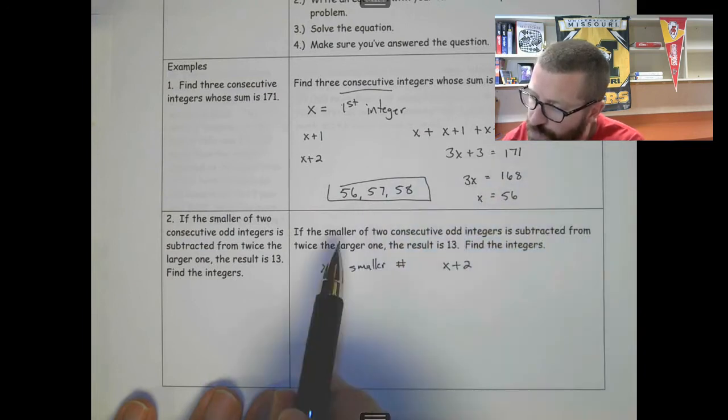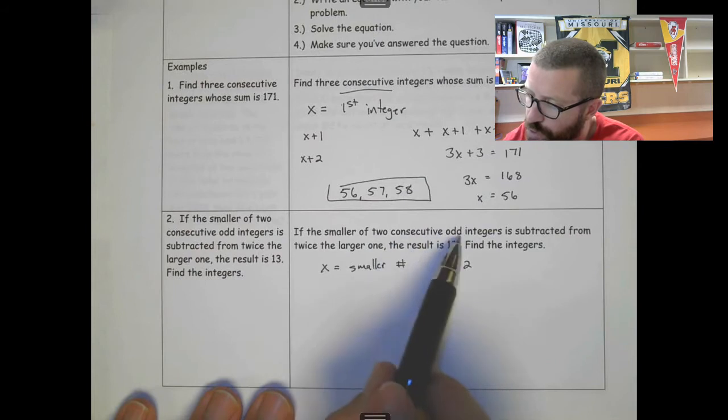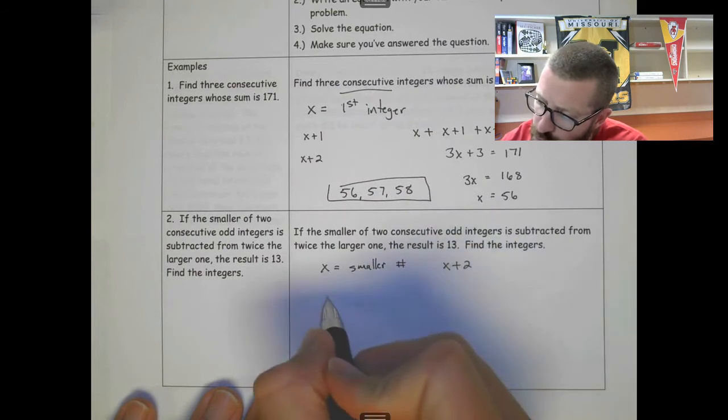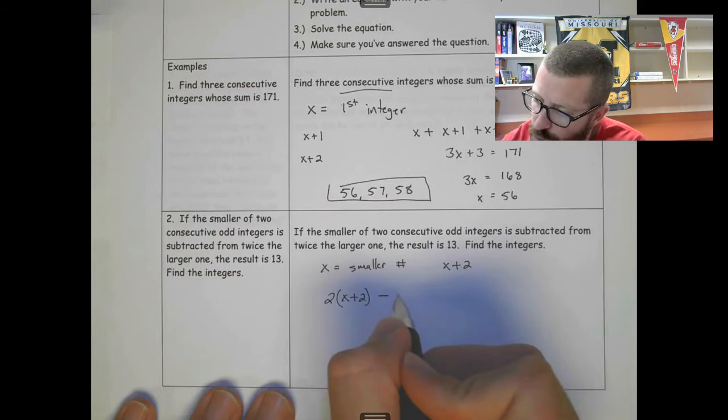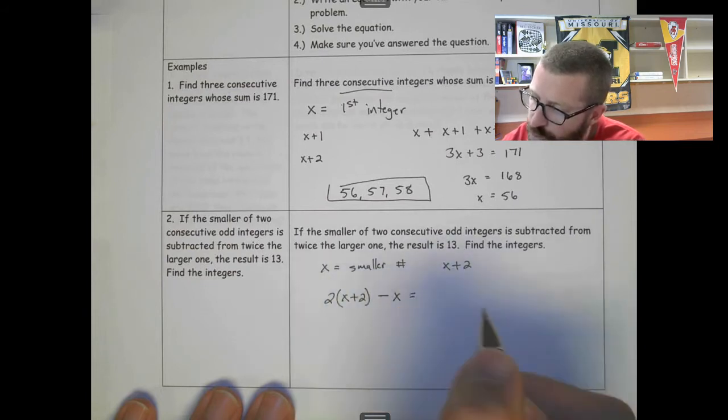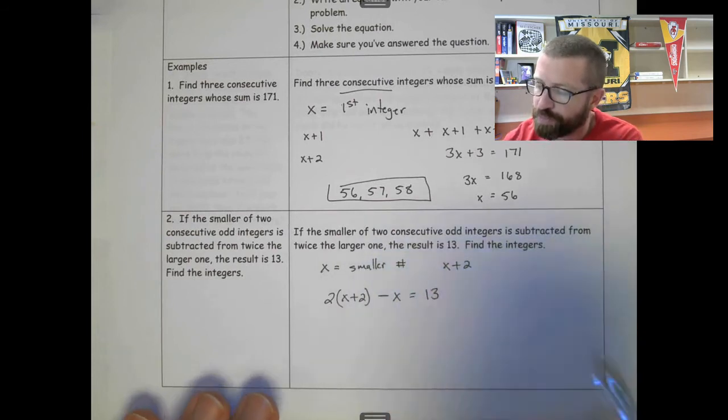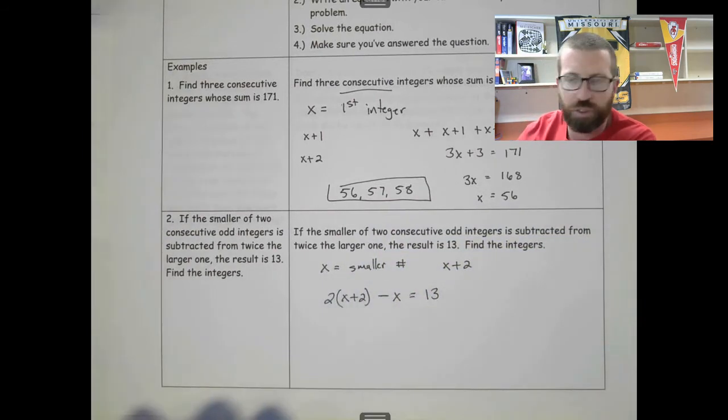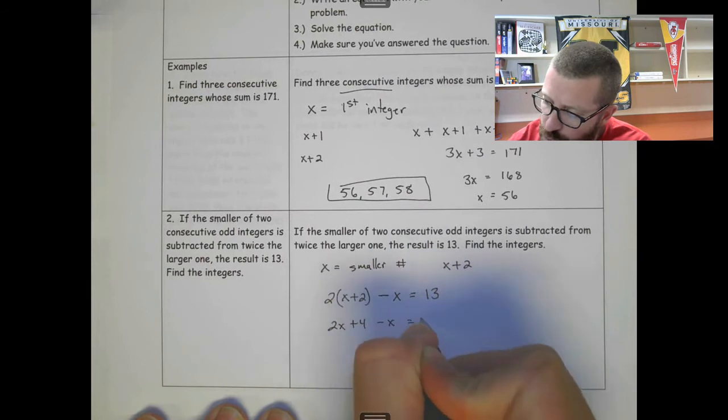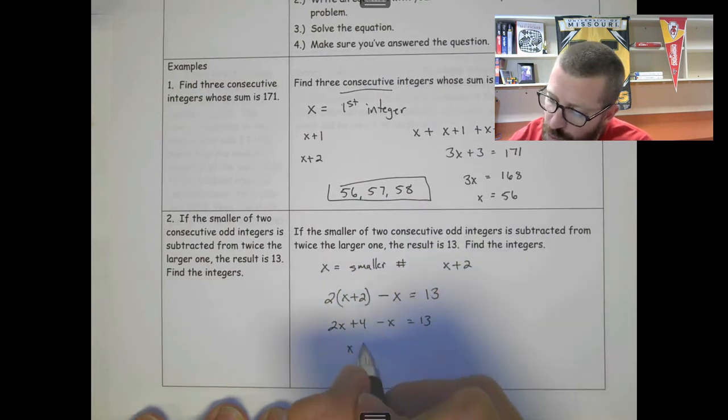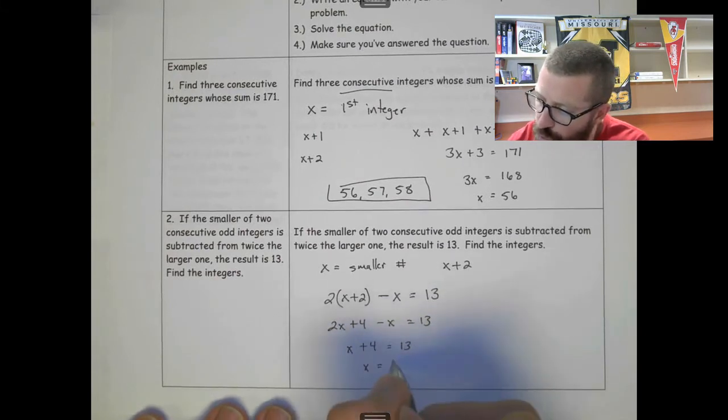The smaller of two consecutive odd integers is subtracted from twice the larger one, so twice the larger one would be two times x plus two, and then I'm subtracting the smaller one, and that equals 13. Distribute the two: 2x plus 4 minus x equals 13.